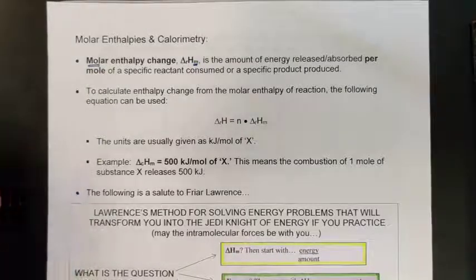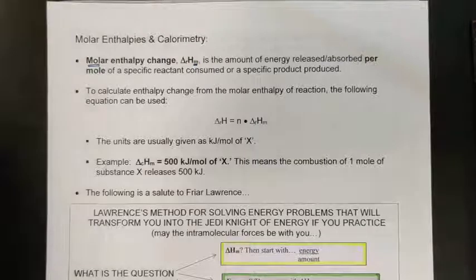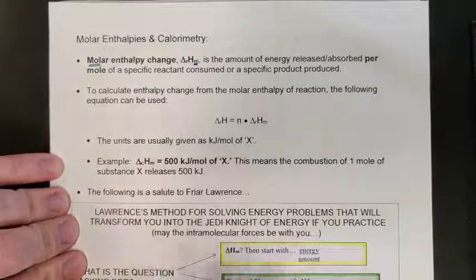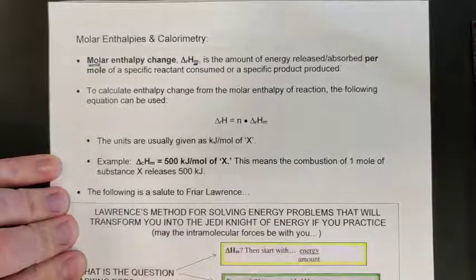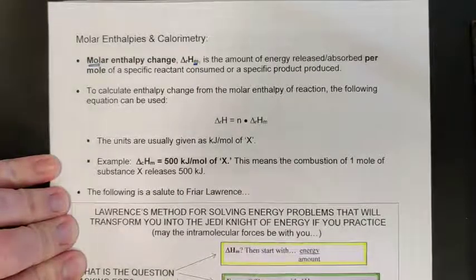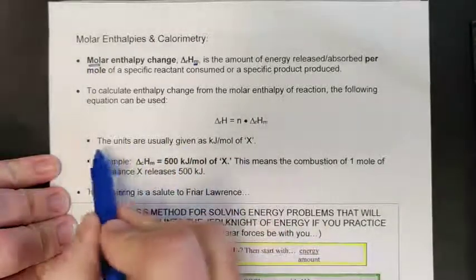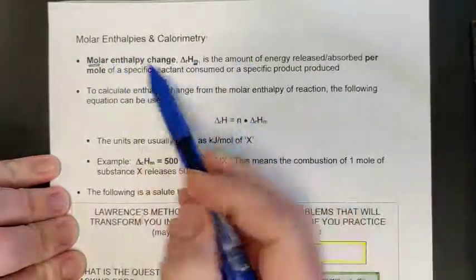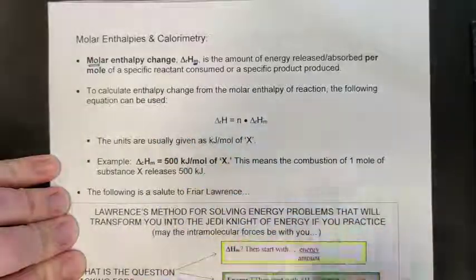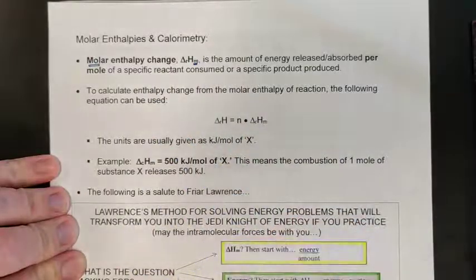There is a formula the textbook gets into, but I don't like it. The only formula I really tolerate is the mc delta T formula, just because it's so well ingrained. The rest of this is more easily accomplished by relating it to stoichiometry and balanced equations through the factor label method, which hopefully you were practicing in Chem 20.